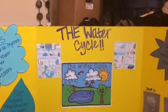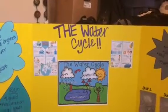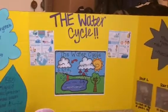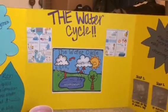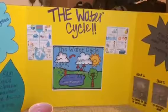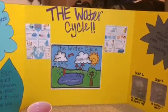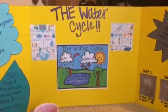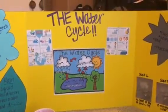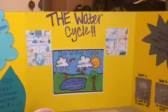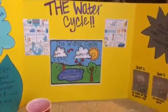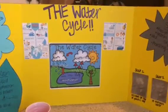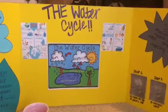Then it transforms into collection, which is also labeled as accumulation. Collection is precipitation collected from oceans, lakes, rivers, and streams. This is a mini lesson of the four stages that make up the water cycle, and of course I would go over this in great detail with my class previously before even entering the center.